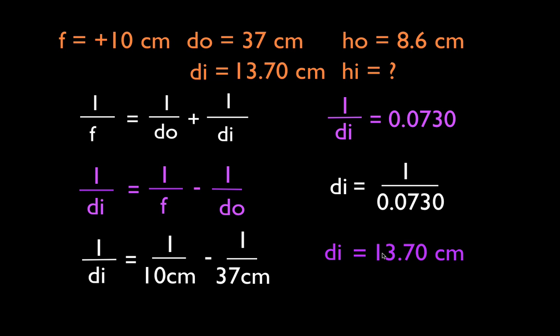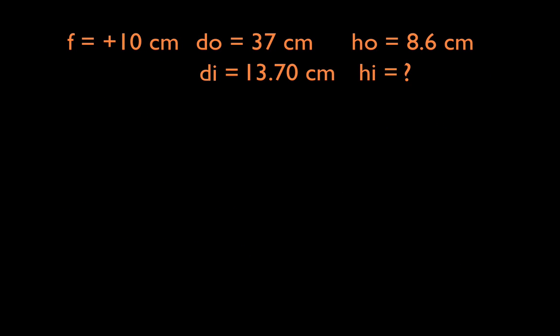Okay, all right, let's go on and calculate the height. Now in order to calculate the height we have to get the magnification. The magnification is equal to negative di over do, and once again I'm just going to plug my numbers in. The di was 13.7, the do was 37 which was given. I have my negative sign here, don't lose your negative sign, and I get that the magnification is minus 0.37. Now what does the minus sign mean? The minus sign means that it's inverted. The 0.37 means that it's going to be smaller.